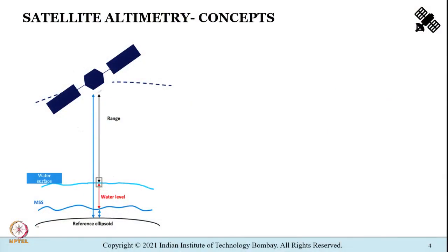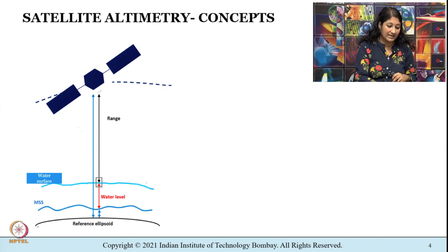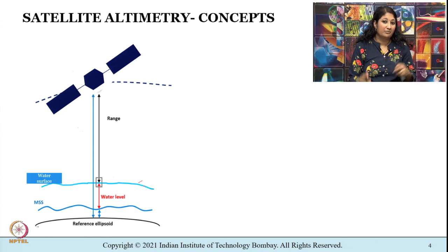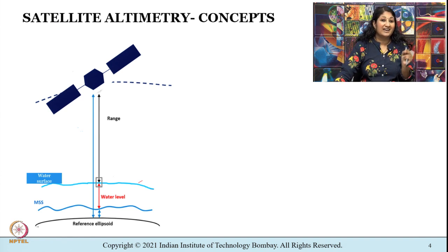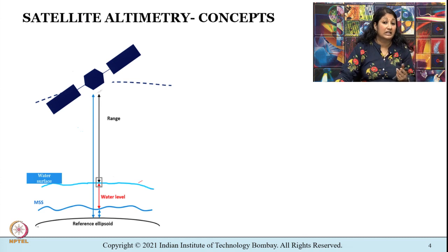Before we move into the details of radar altimetry, let us first try to understand the basic concept. The fundamental principle of satellite altimetry is to estimate the water surface elevation by measuring the distance from the satellite to the surface of the water. The sensors on board the satellite are capable of transmitting signals at the rate of even around 2000 pulses per second for high-precision altimeters.